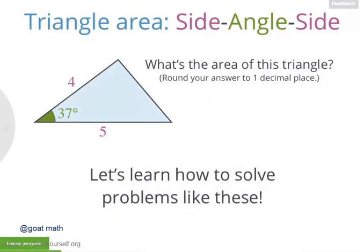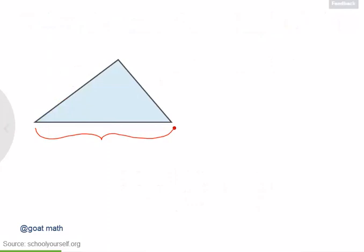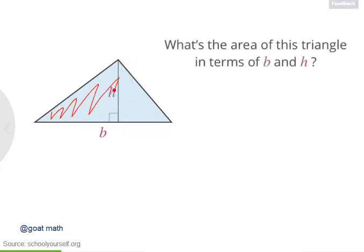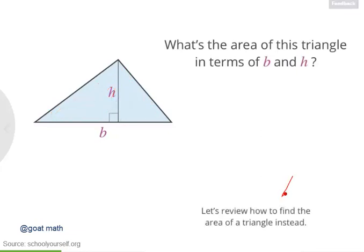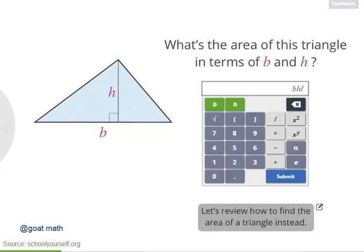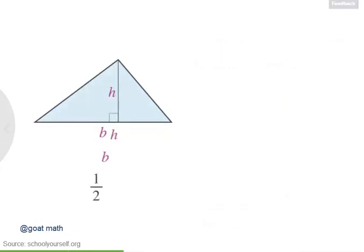Okay, great, let's get started. Don't worry about this side and this angle just yet. Suppose the base of our triangle has length b, and the vertical height, meaning the perpendicular distance between the base and this vertex up here, is h. What's the area of this triangle in terms of b and h? If you're not sure, click down here to review. Exactly, the area of a triangle is 1 half times its base times its height.